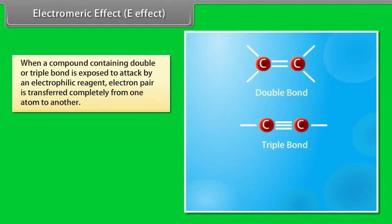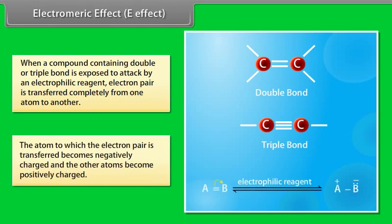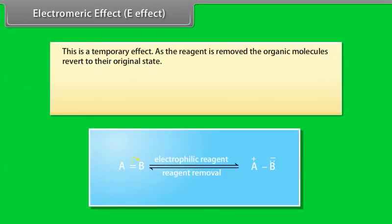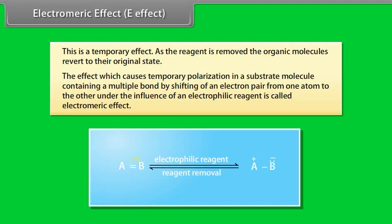Electromeric effect (E effect): when a compound containing a double or triple bond is exposed to attack by an electrophilic reagent, the electron pair is transferred completely from one atom to another. The atom receiving the electron pair becomes negatively charged, and the other becomes positively charged. This is a temporary effect — when the reagent is removed, the organic molecule reverts to its original state.